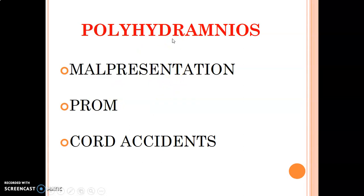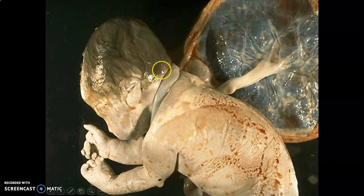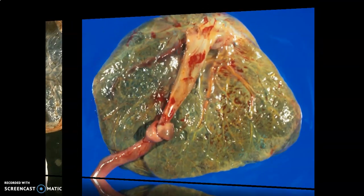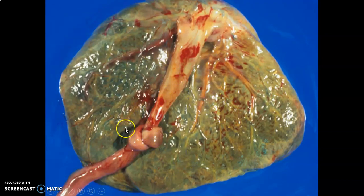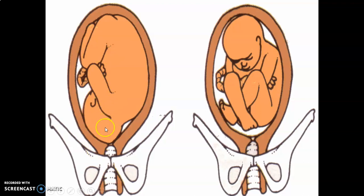For both oligohydramnios and polyhydramnios, you need to know the causes and the effects. An example of a cord accident: the baby had so much space to move about within the cavity due to excess fluid, and the cord went around the neck, which can suffocate or asphyxiate the fetus. A knot can also form in the umbilical cord because the baby was moving about in too much fluid, preventing oxygenated blood from reaching the fetus. Normal presentation is cephalic, but malpresentation can occur as breech with the gluteal region first.